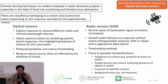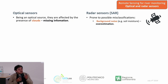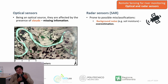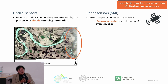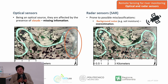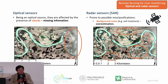Both sensor families have potential issues. Optical sensors can have missing information when an obstacle — such as clouds — is between the sensor and the territory. Even a light cloud can completely obscure the ground information. On the other side, radar sensors are prone to overestimation due to backscatter issues, background noise, or the presence of soil moisture, which can produce false water patches that don't actually exist on the territory.